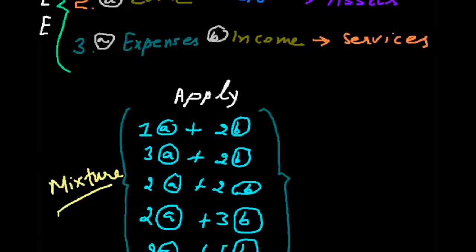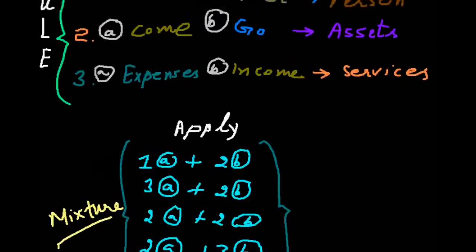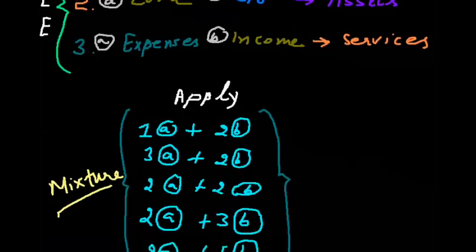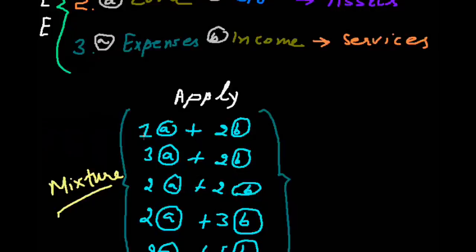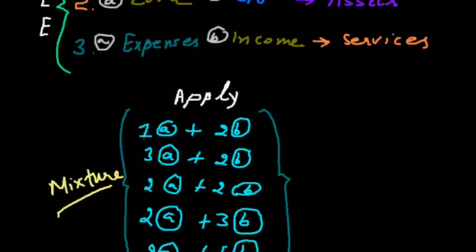Suppose we sell goods. At that time, if we sell goods on credit — means we sell goods to Charm — Charm is a receiver. So we apply the first formula: Charm account debit. And what goes from the business is goods, so goods account credit, or we can say sales account credit.